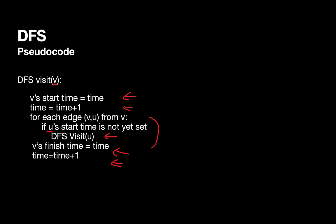The big picture: when we start processing a node, we mark the start time. When we're completely done processing the node, we mark the finish time. Any time we store away a time — whether the start time or the stop time — we afterwards increment the time. So all times should be distinct. Once we store a time, the time gets incremented so the next stored time is at least one greater.